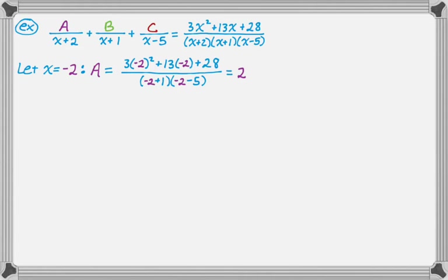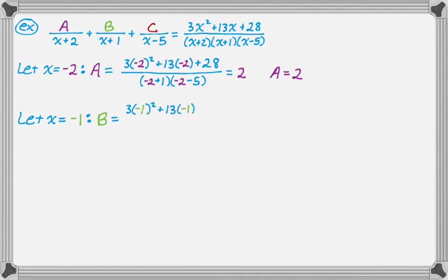To find B, I let x equal negative 1 (the zero of x plus 1). On the right-hand side, I cover up the x plus 1 and substitute negative 1 for every remaining x. Working that out gives B equals negative 3.